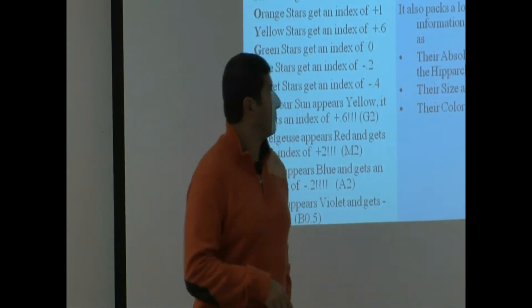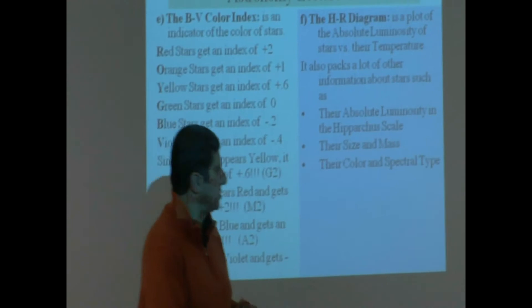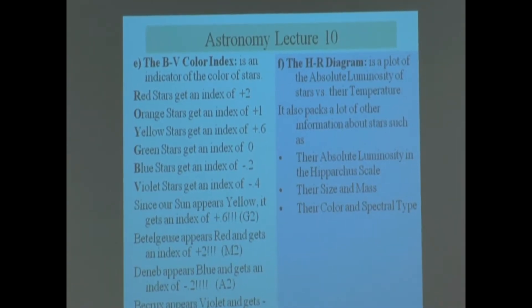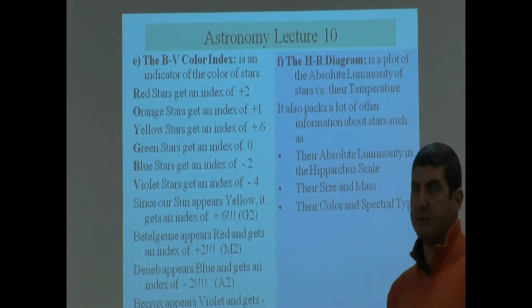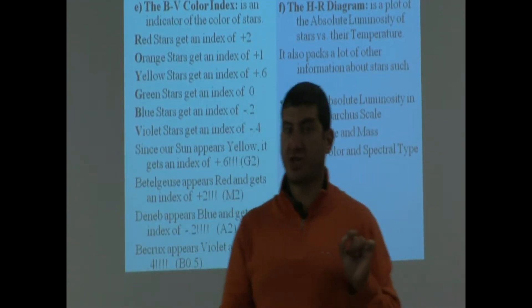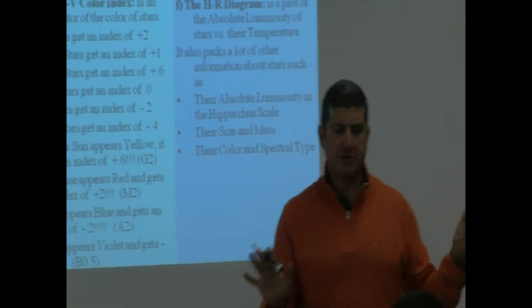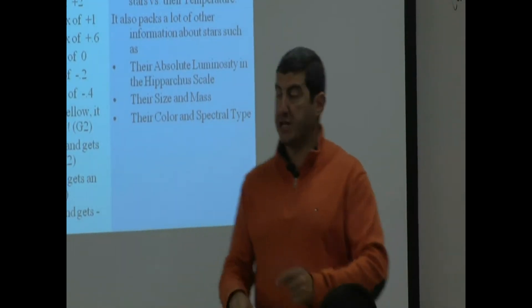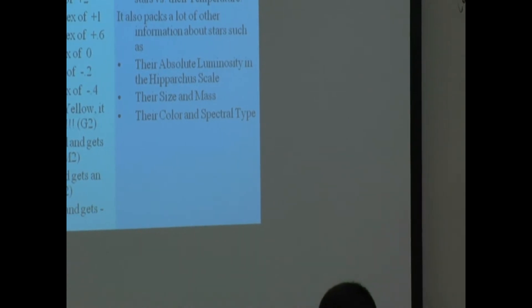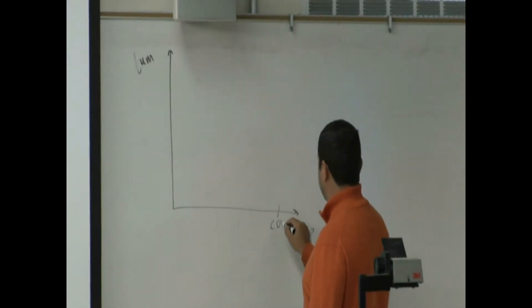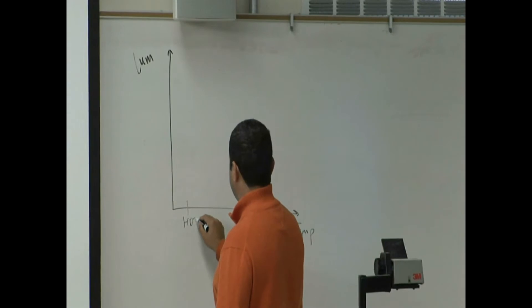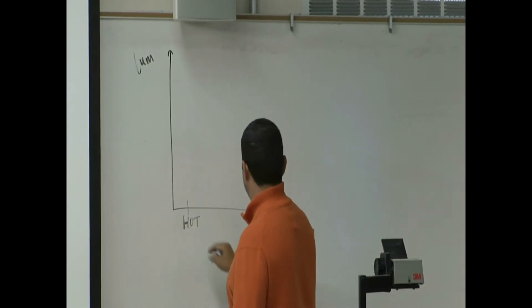So the HR diagram is a plot of the absolute luminosity of stars. On the vertical axis you plot the luminosity of star. The HR diagram does not plot apparent luminosity, which depends on how close the star is to us. We plot the absolute luminosity versus temperature. The cold stars they put on the right side, the hot stars they put on the left side.